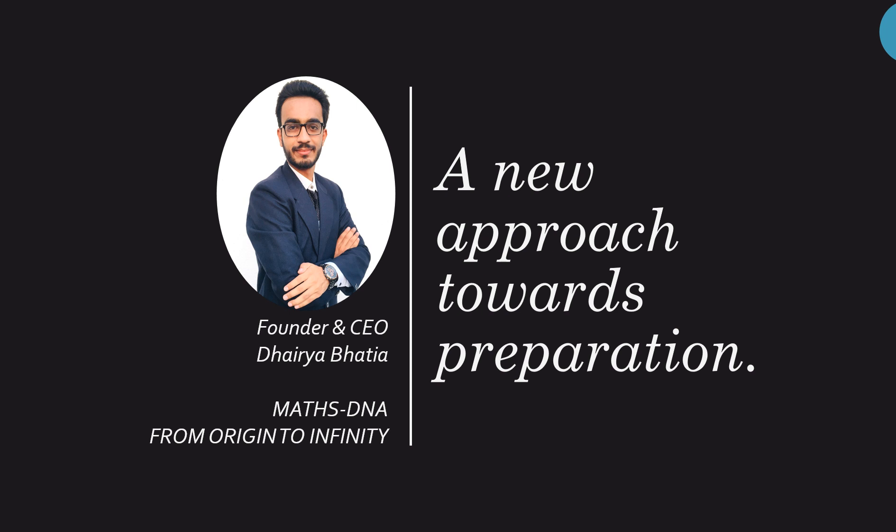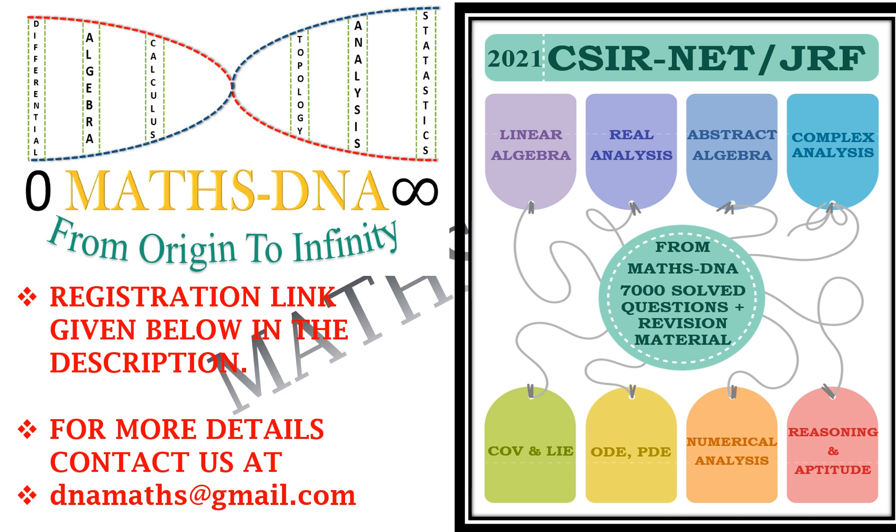But before that, let me share something with you. If you are preparing for 2021 CSIR-NET JRF, then here is good news for you. We are providing 7000 solved questions that include previous year questions as well and revision material for linear algebra, real analysis, abstract algebra, complex analysis, reasoning and aptitude, differential equations and calculus of variation and linear integral equations. For these questions and material, you can register at the link given below in the description or you can directly contact us at dnamaths@gmail.com.